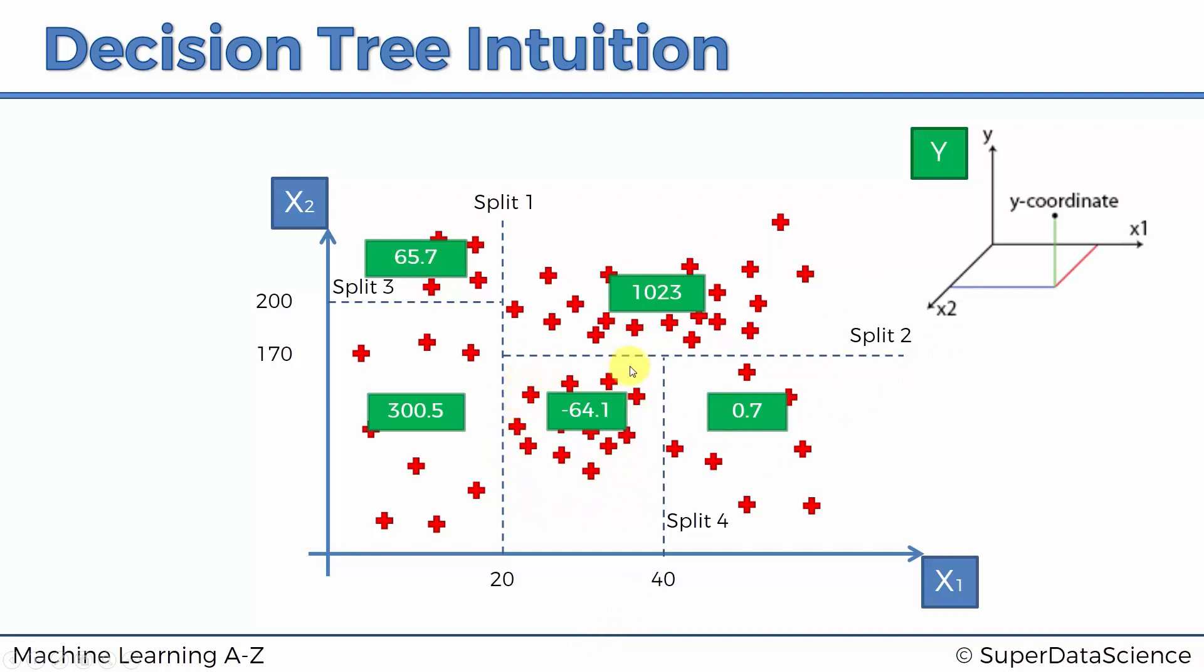And so now we can more accurately predict the value or assign the value of y to a new coming element. And as you can see, now it's the average, not just across all of them. The average is taken in specific parts or segments of our scatterplot, and therefore it is, or it's supposed to be, more accurate. That's the whole point of the regression tree.